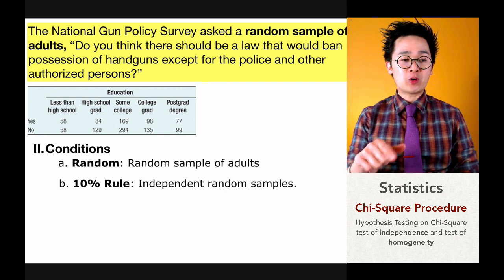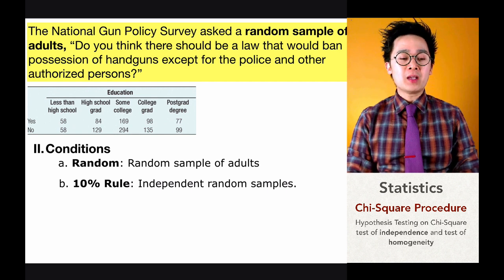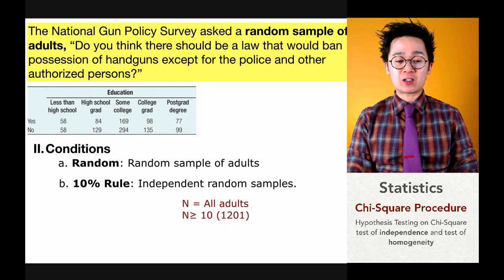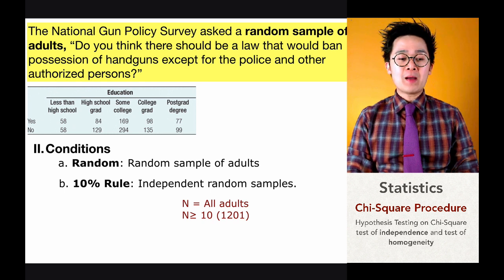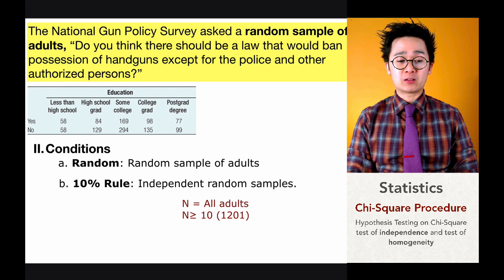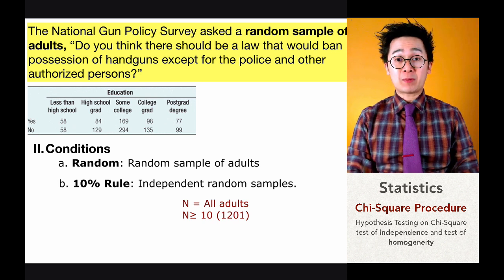When you add all the rows and columns, the sample size equals 1,201. The 10% rule is satisfied because if our population of interest is all adults, that population is much larger than 10 times the sample size of 1,201, which would be 12,010. So the entire population of adults is indeed larger than 12,010.